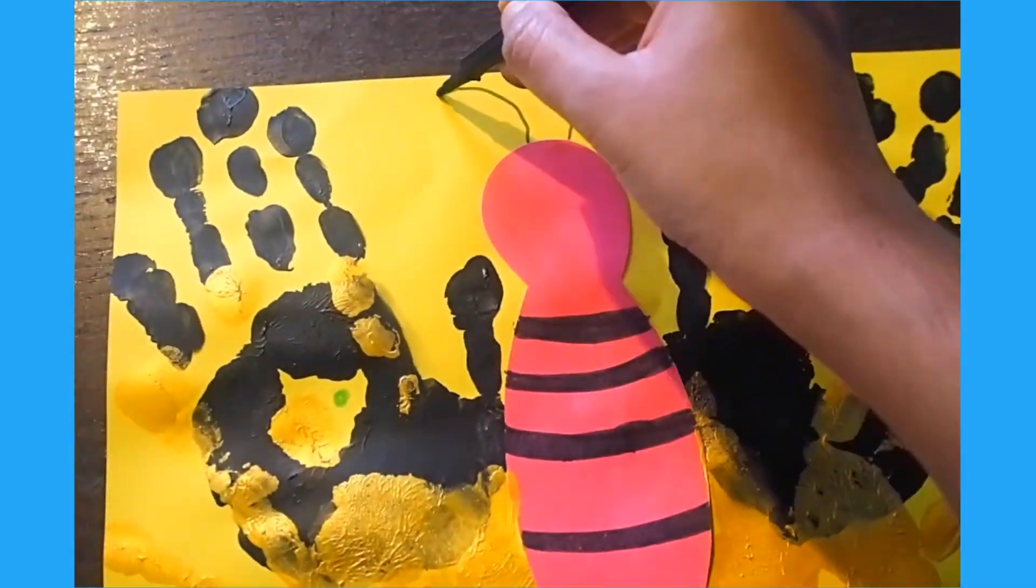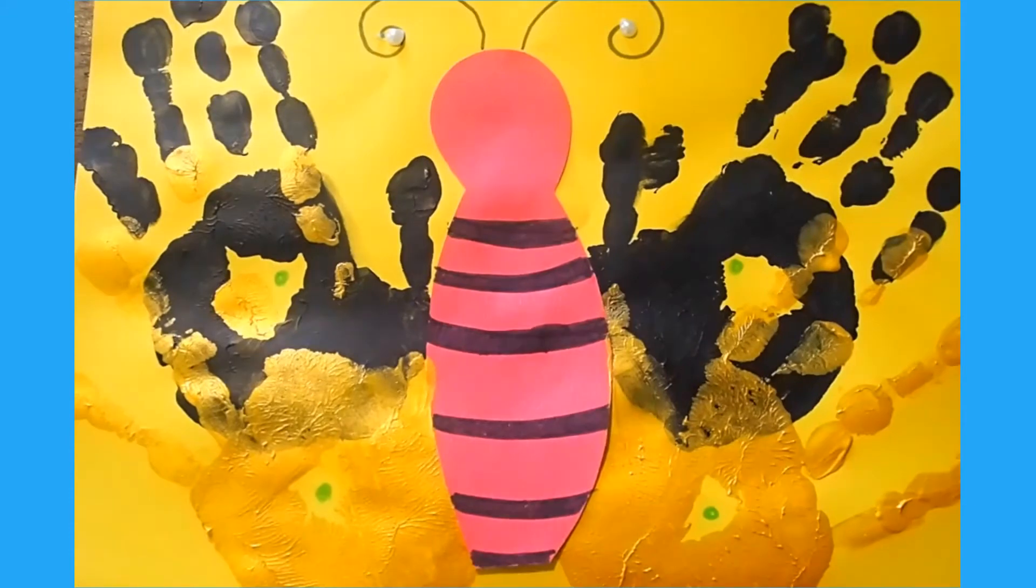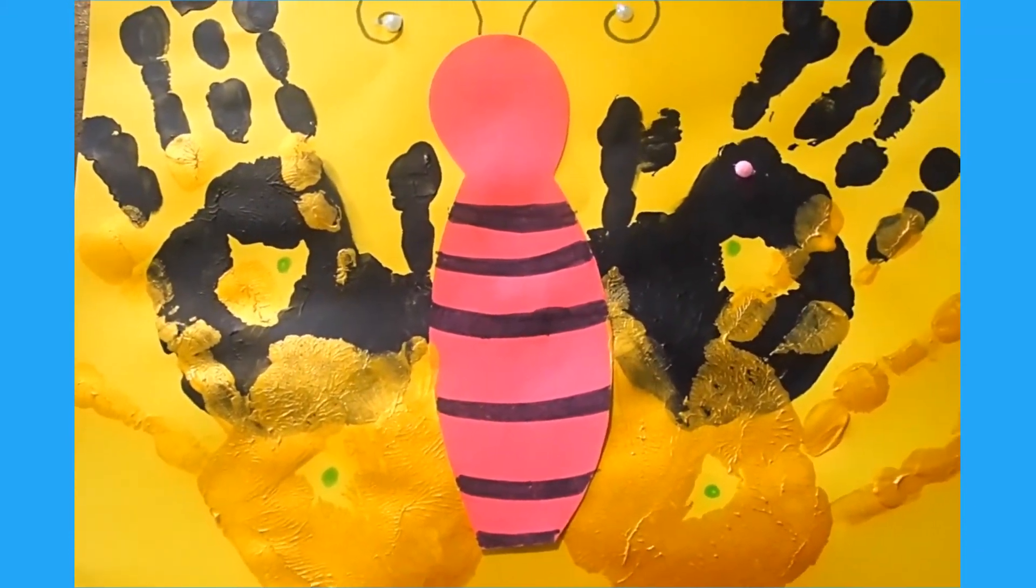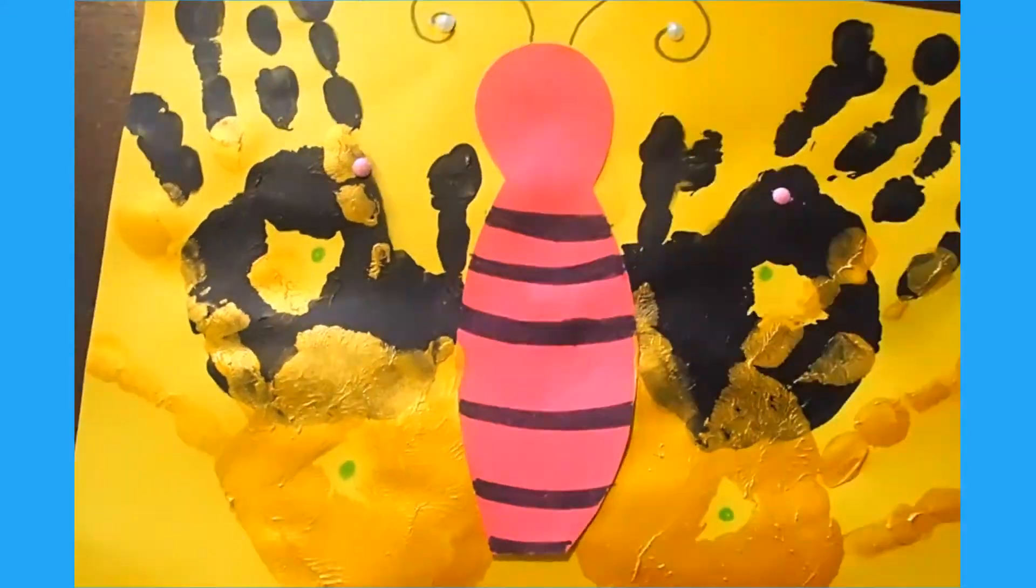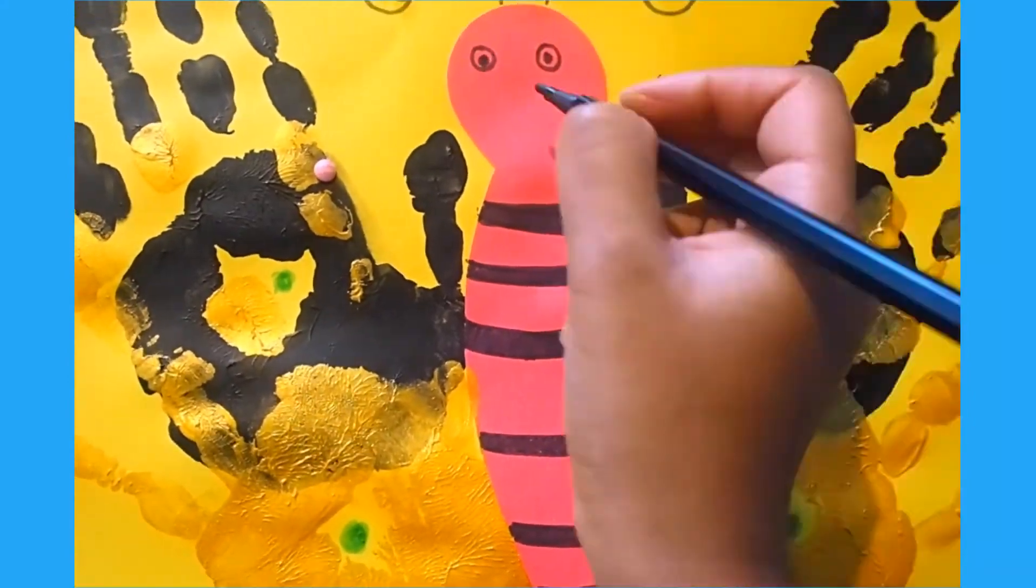Once the handprints are dry, you can start to add some detail. Children can add some antennae, some eyes, and maybe a smiley face. Can they have a go at adding some symmetrical patterns on both sides of the wings?